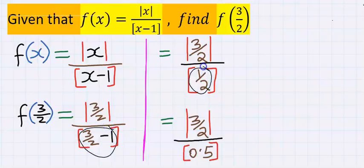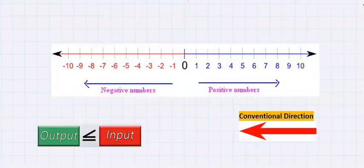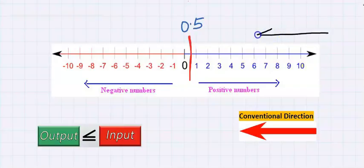1 over 2 is the same as 0.5. Next, look for the greatest integer function of 0.5. 0.5 is in between 0 and 1, and conventionally, greatest integer function goes towards the left only and does not accept decimals or fractions as the output.